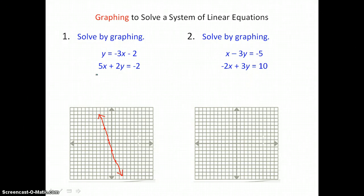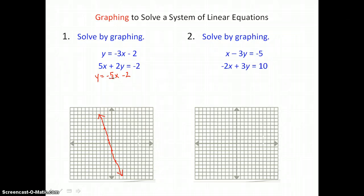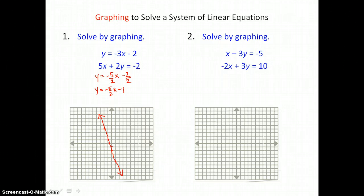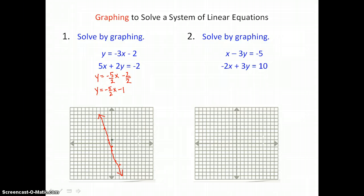In the second equation, we need to solve for y, so I'll start by subtracting 5x from both sides, and then dividing every term by 2. When I simplify, I have y equals negative 5 halves x minus 1. So I'll first graph that y-intercept of negative 1, and then use the slope of negative 5 over 2 — going down 5 units and to the right 2 units, or up 5 units and to the left 2 units — to graph my line.